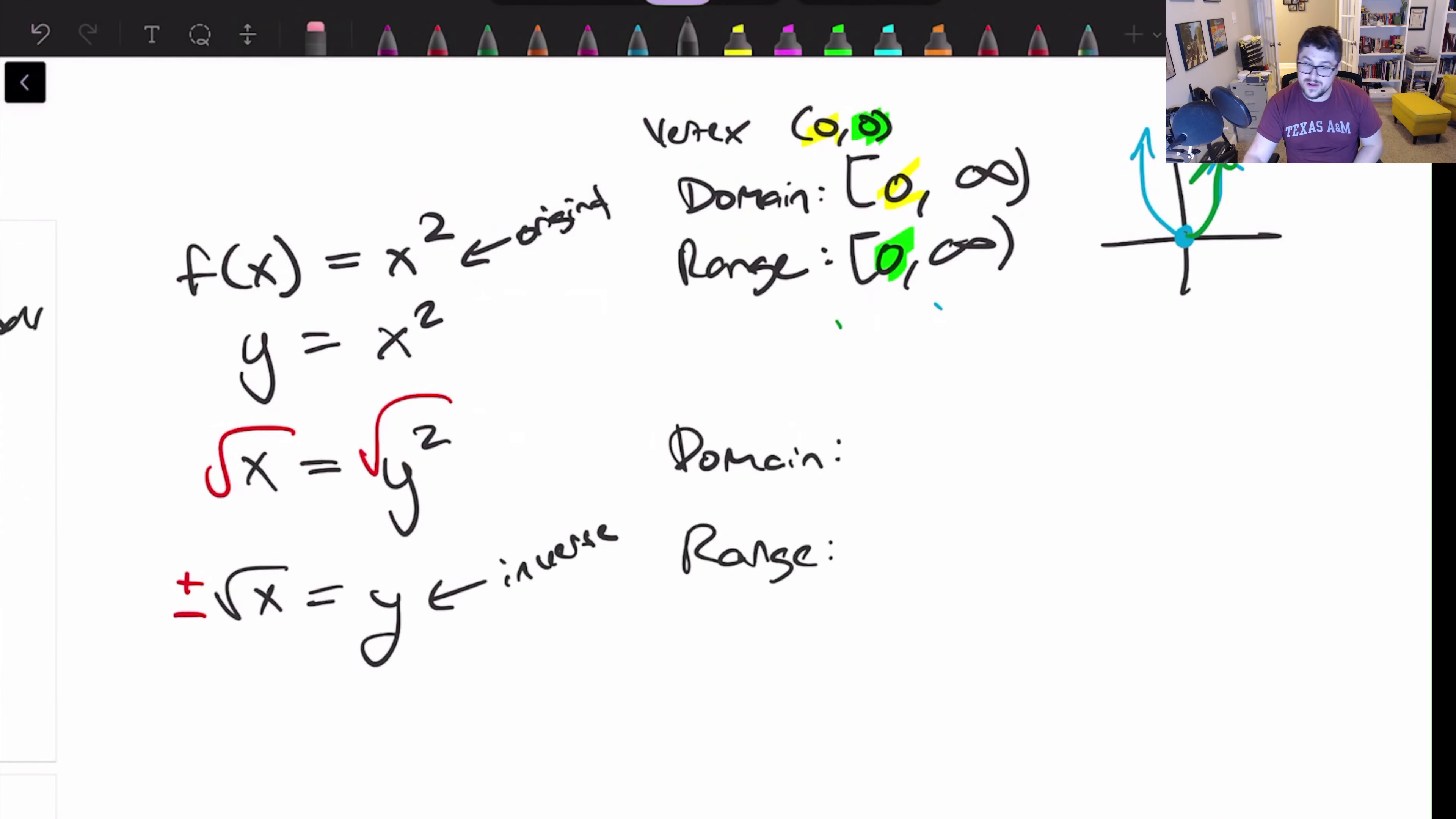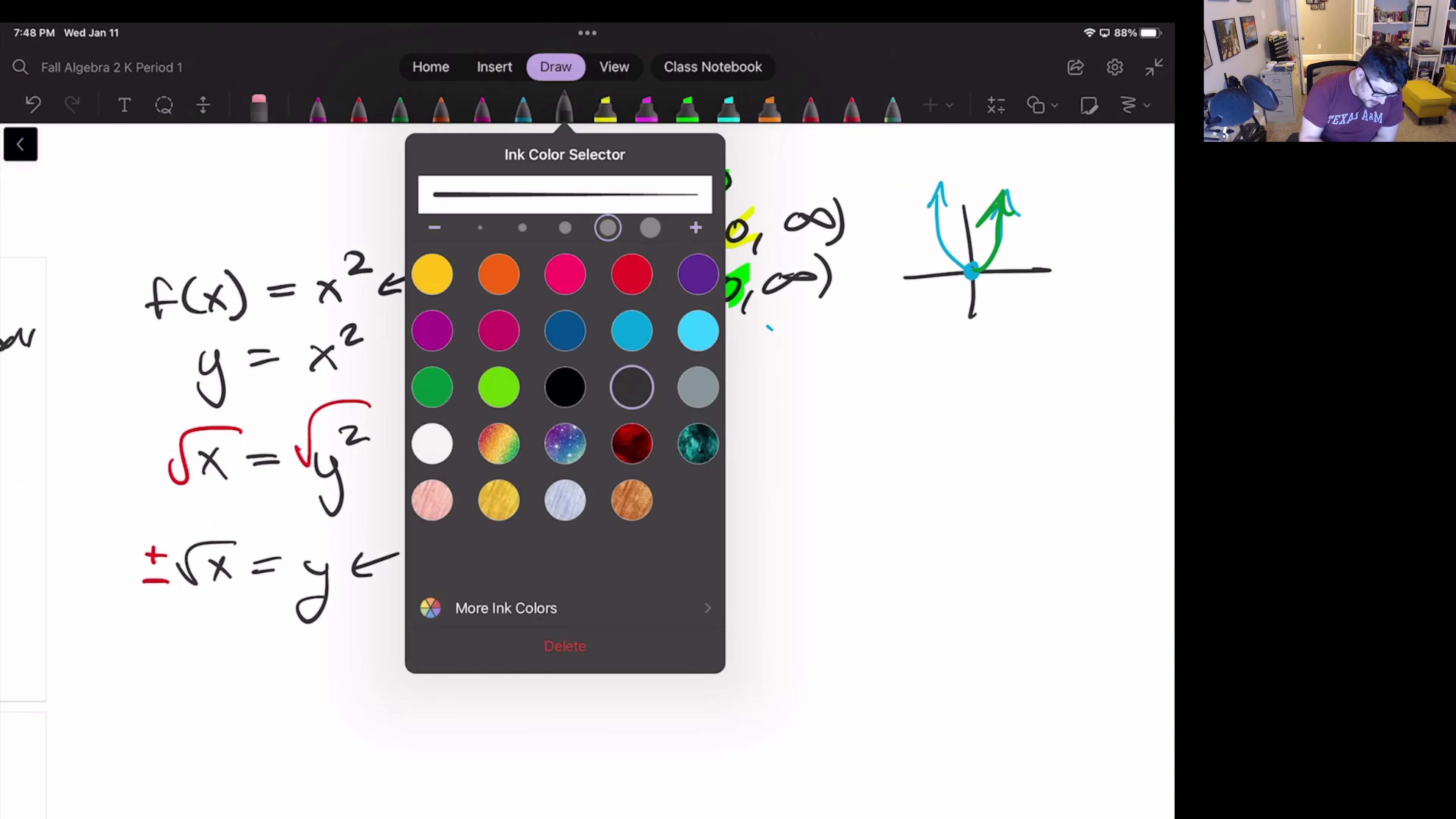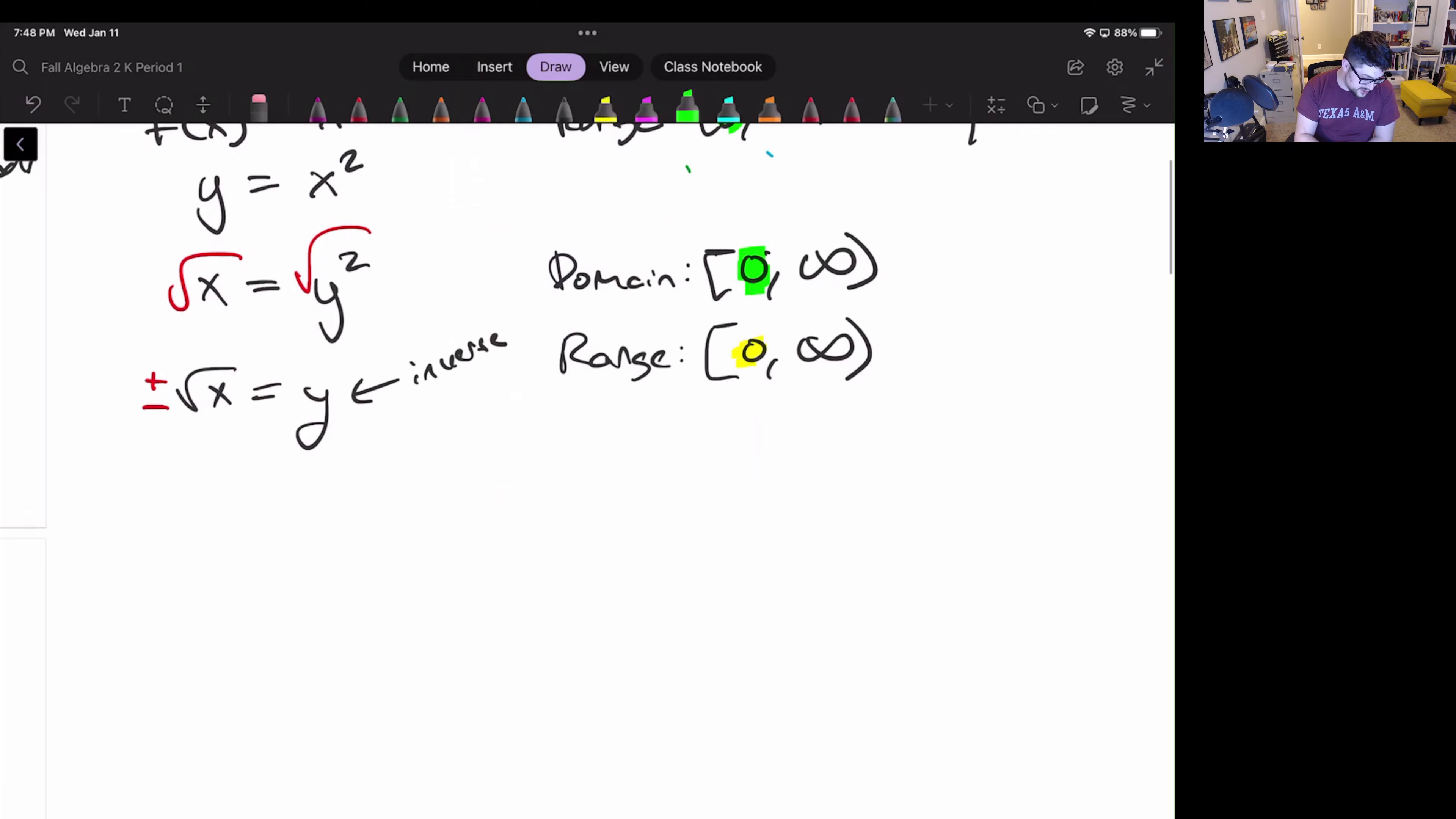So, we said domain is from zero to infinity and range is from zero to infinity because what should be happening is our domain and range should switch. Problem is this is kind of a boring graph because it's at zero, zero. So let's take something a little more interesting.